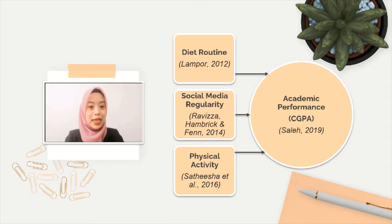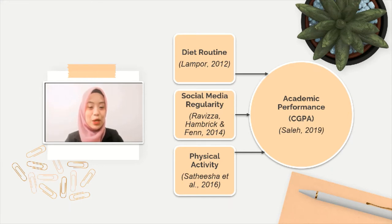There is one independent variable, which is academic performance, measured using CGPA. The first dependent variable is diet routine. This dependent variable is supported by a study by Lampo (2012), where reduced dietary fat intake was significantly linked to students' performance.